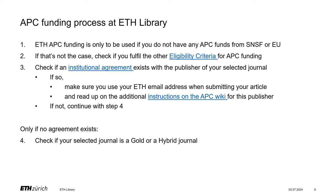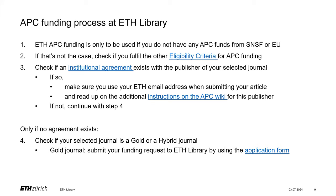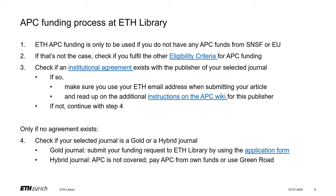If we do not have an agreement that includes your journal, you will need to check whether the journal is a gold or a hybrid journal. For gold journals, you can submit the APC invoice received from the publisher to ETH Library using a form on our website, and we will then settle the invoice with the publisher. For hybrid journals without an existing agreement, there is currently no funding available, so you either need to pay the APC from your own budget, publish closed access, or provide open access to the article via the green road.